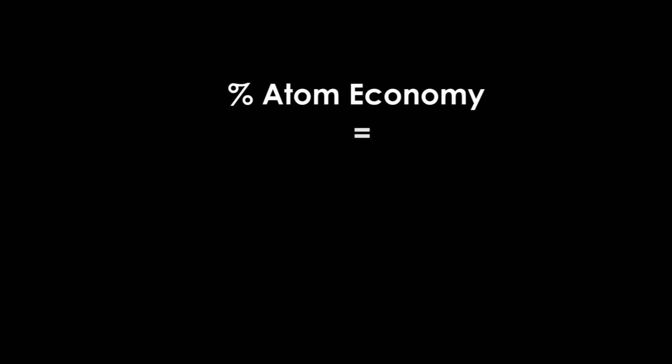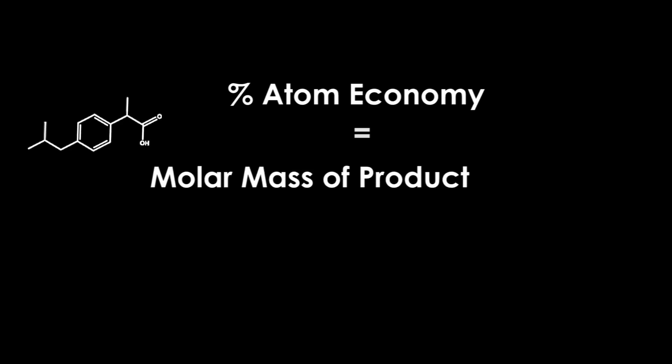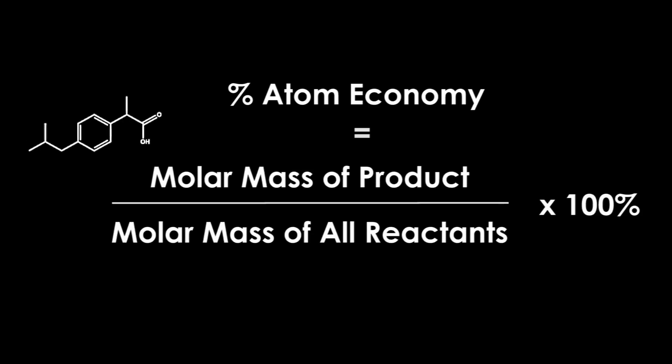Let's calculate the percent atom economy of each reaction and see how they stack up. To do the calculation, we take the molar mass of the product and divide that by the molar mass of all of the reactants used.